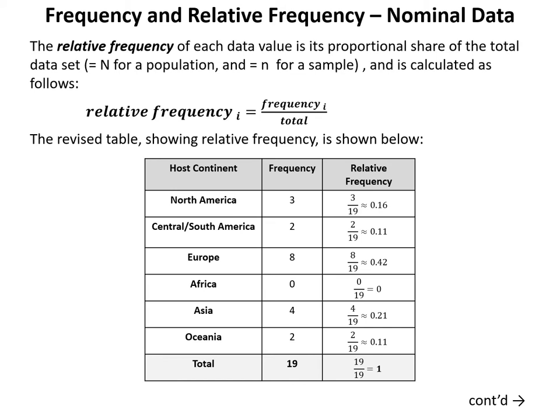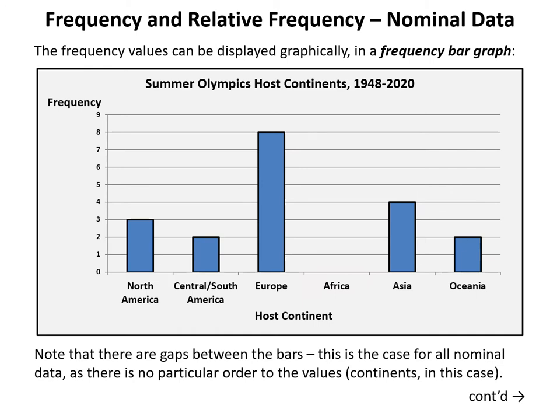The answers are rounded to two decimal places, which is the same as rounding to the nearest percent. Most importantly, the relative frequencies must add up to the whole — since there are 19 total, the fractions all have 19 as denominator and sum to 19/19 = 1, as shown in the table.